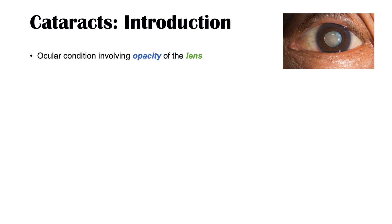A cataract is an ocular condition involving opacity of the lens of the eye. Opacity simply means that the lens of the eye becomes clouded, preventing light from traveling through the lens properly.